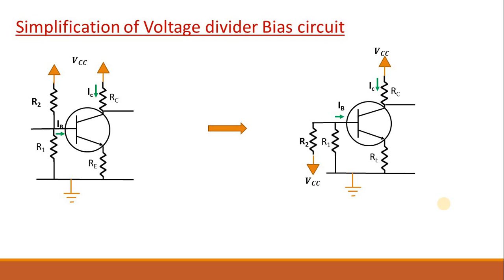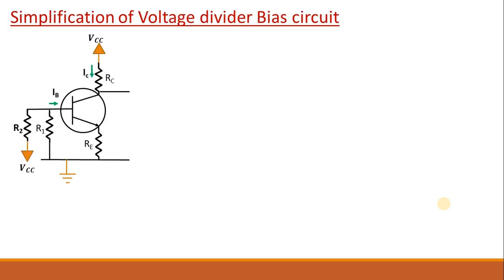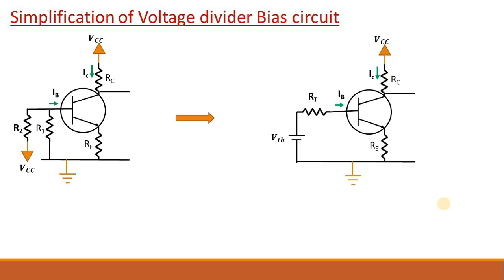If you redraw it, just make R2 looks like parallel to R1. And now if you look at this redrawing then you can easily see that in the base side there is R1 and R2 is in parallel. So we can convert this input side by using Thevenin Network Theorem which will look like this. Here this voltage will be replaced by Vth and the R1 and R2 will be replaced by Rt.